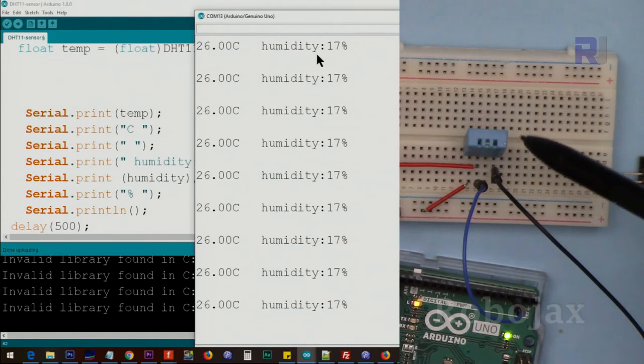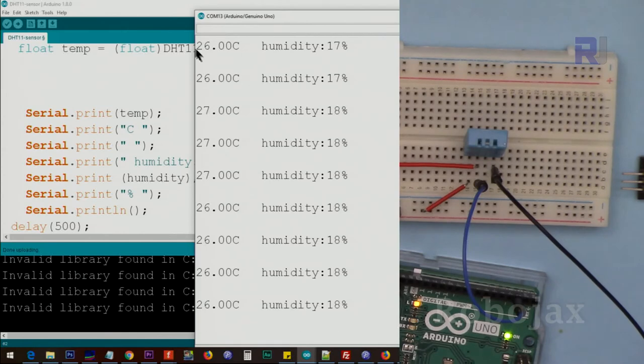Here is a demonstration. The module has been connected, it's powered up, serial monitor is open. As you can see it shows temperature, this is temperature in Celsius, and we put the C. This is a space, and then humidity 18 percent, and then we have a new line here.